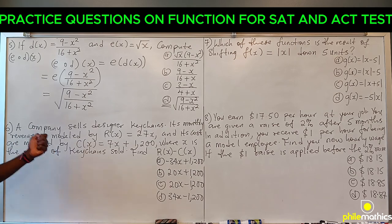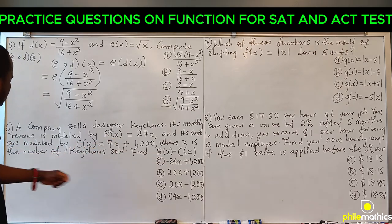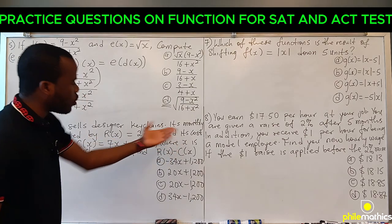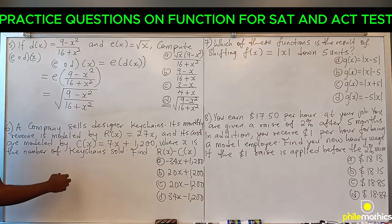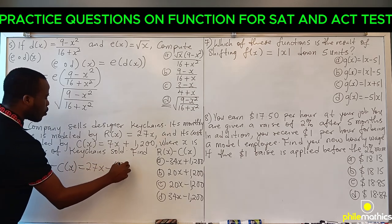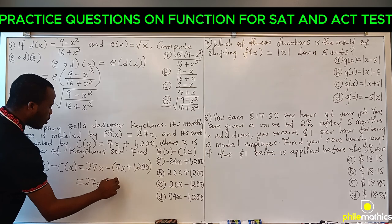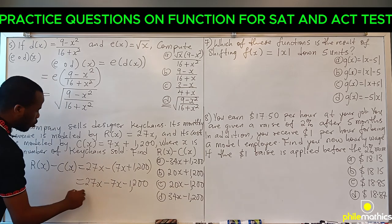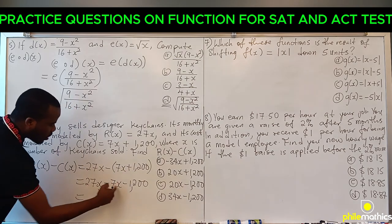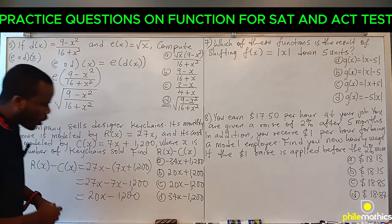Question 6: A company sells designer key chains. Monthly revenue is R(x) = 27x and costs are C(x) = 7x + 12. Find R(x) - C(x). This is 27x - (7x + 12). Opening the bracket: 27x - 7x - 12 = 20x - 12. Don't make the mistake of leaving it as plus. The correct option is C.